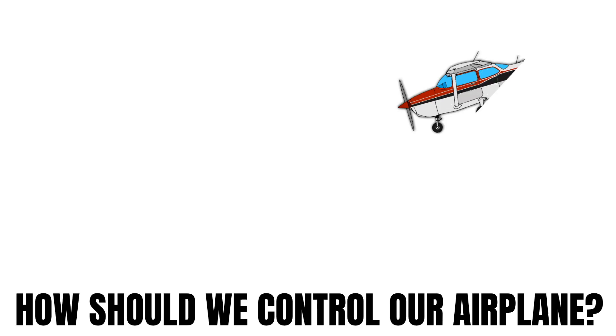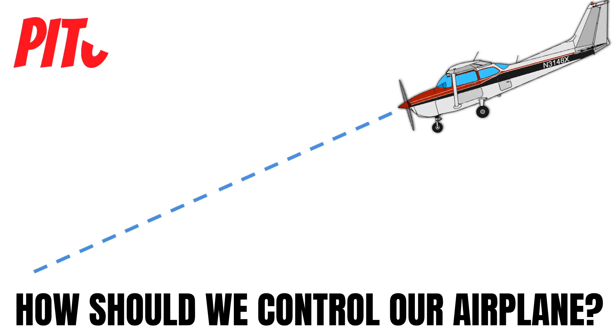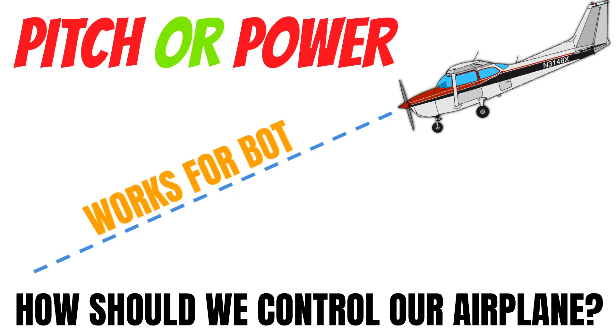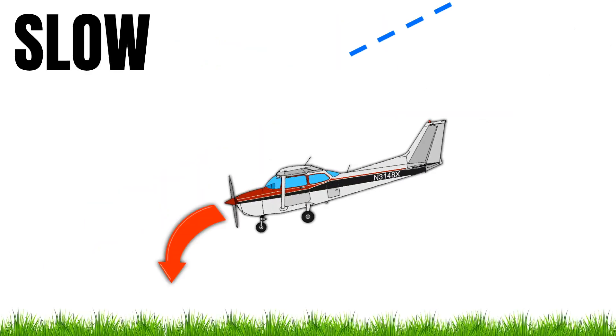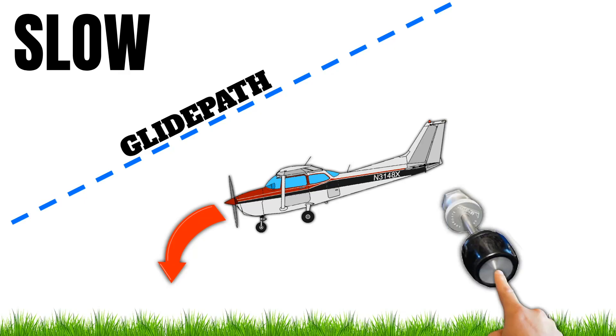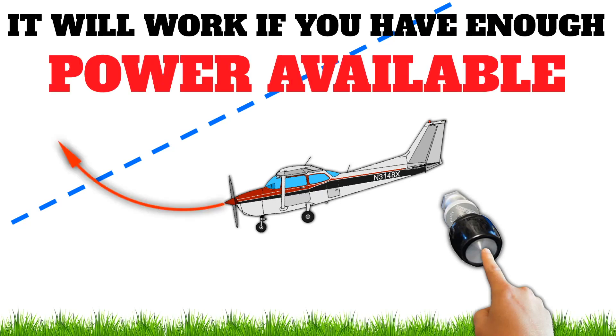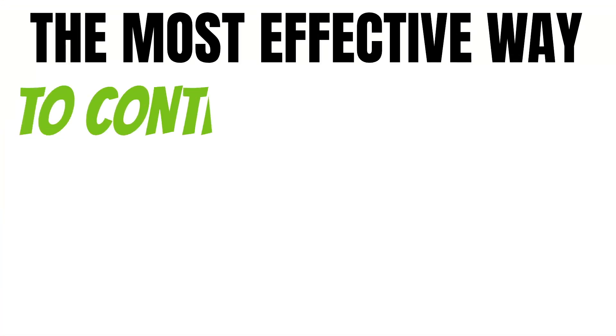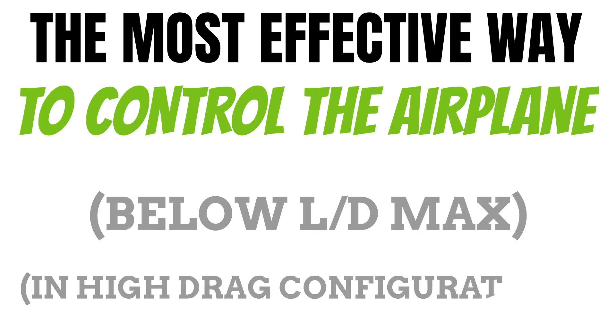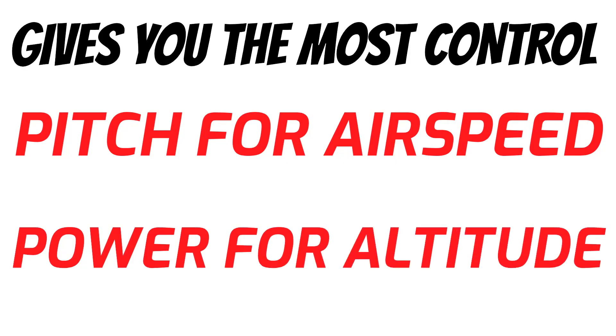So how should we control our airplane when descending during an approach? It is possible to use pitch or power to control both airspeed and altitude, and in some situations — like when you're close to the ground — you might want to use both together. You obviously don't want to pitch down into the ground if you're getting slow and also low on glide path — just push the power up a little and you will speed up. But the most effective way to control your airplane when you're below LD max or in a high-drag configuration is to pitch for airspeed and use power for altitude. This will give you the most control over your airplane when flying slow or making an approach.